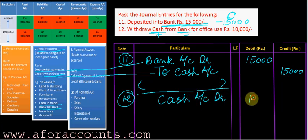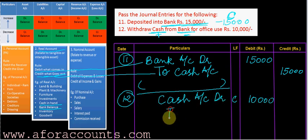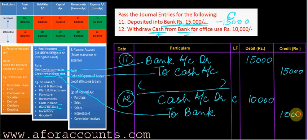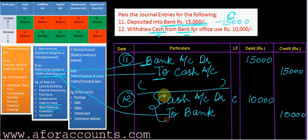Cash account debit 10,000 — it is again a contra entry. Cash account debit 10,000 to bank account. The bank balance decreases; the rule is credit what goes out, so bank account is credited. To recap: when bank balance increases, debit the bank account; when cash balance decreases, credit it, and vice versa. When one side is bank and the other is cash, such an entry is called a contra entry.